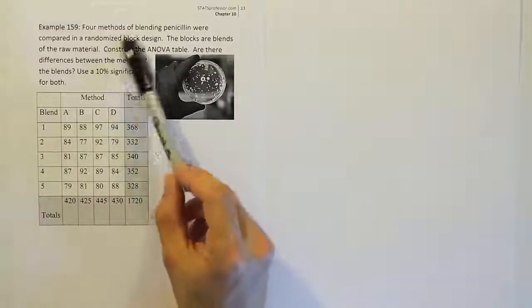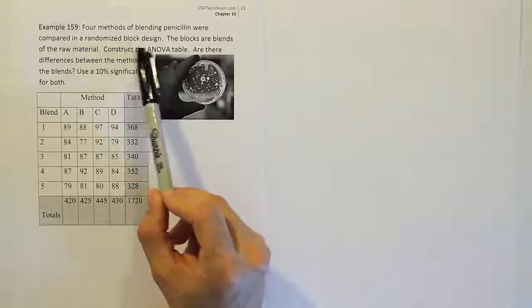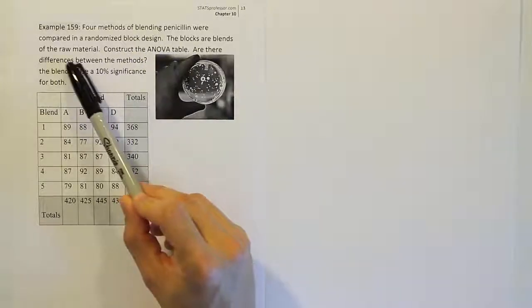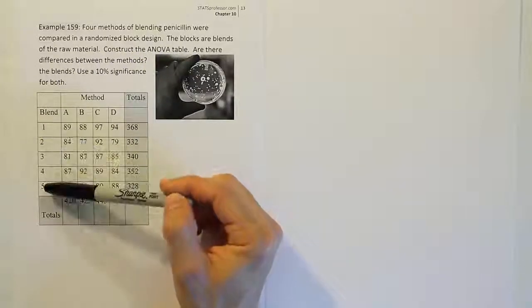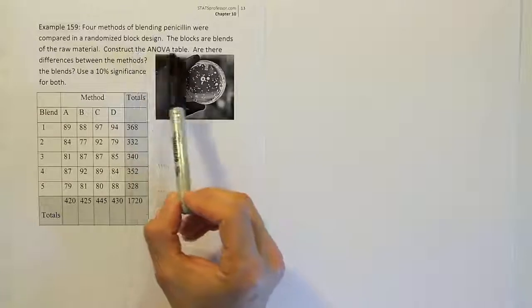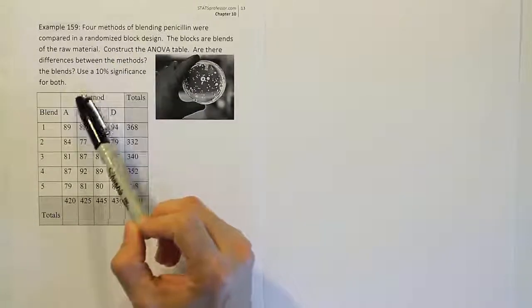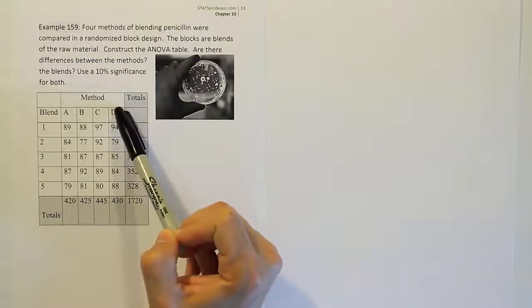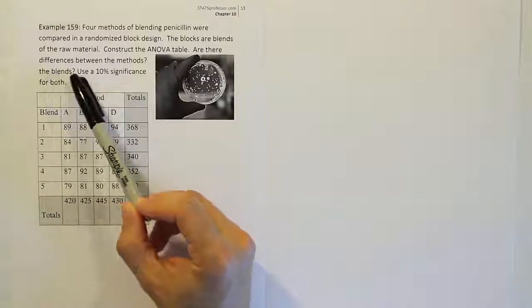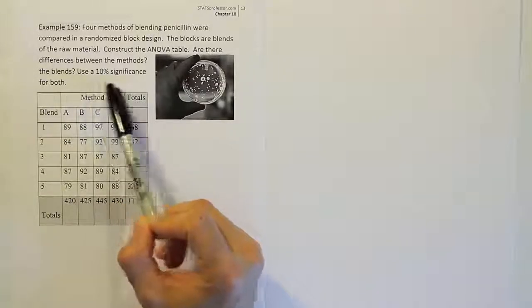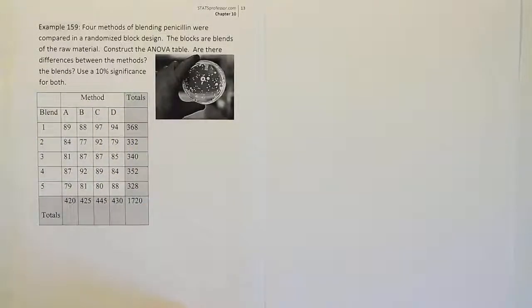Example 159. Four methods of blending penicillin were compared in a randomized block design. The blocks are blends of the raw material. The problem asks us to construct the ANOVA table, determine if there are differences between the methods, determine if there are differences between the blends, and use a 10% significance level for both tests.